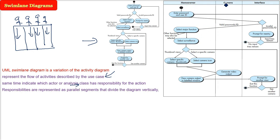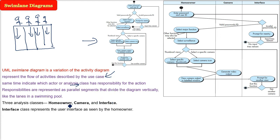So what is the responsibility of which class? Homeowner, camera, interface. This is like the lanes in a swimming pool. Let us assume we have defined or found out three classes: Homeowner, camera and interface. Interface is nothing but the user interface. Interface class will represent the user interface as seen by the homeowner.